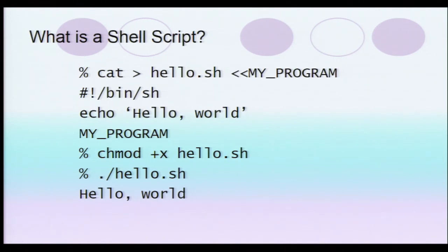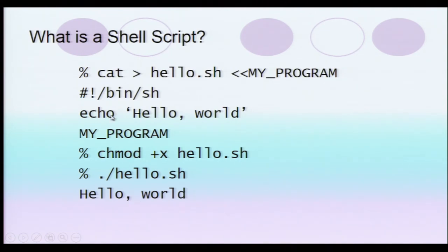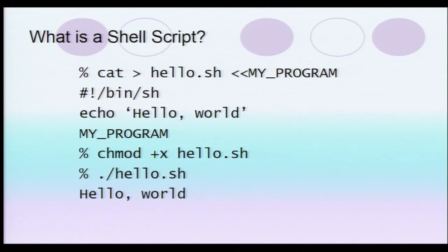Where is this getting executed? It is getting executed through the shell program directly on the Unix operating system. It appears it is not an application program but your shell script that is printing hello world. We take input from myprogram, concatenate and type into hello.sh from myprogram which is located in /bin/sh. It contains 'echo hello world', and chmod gives executable permission to hello.sh — automatically you can execute it and get your echo hello world print.